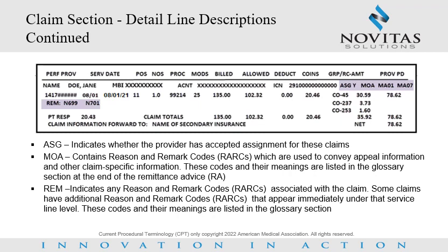Claim section detail line descriptions continued. ASG indicates whether the provider has accepted assignment for these claims, containing either a Y for yes or an N for no. MOA contains remittance advice remark codes at the claim level, for example MA01. RARCs are used to convey appeal information and other claims-specific information. These codes and their meanings are listed in the glossary section at the end of the remittance advice.